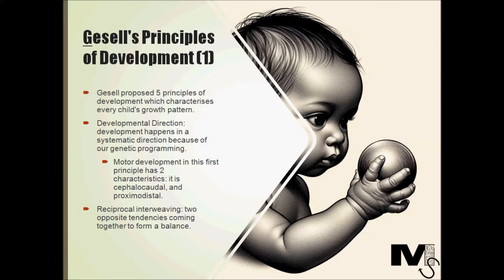The second principle is reciprocal interweaving. This concept refers to two opposite tendencies coming together to form a balance. For instance, a child could use one hand to lift an object and would then try the same exercise with the other hand. This then leads to the child having a preference of hand usage for future actions. The same concept can be applied for personality development — a child could go through a pattern of introverted and extroverted tendencies and then integrate the two to form a balance.